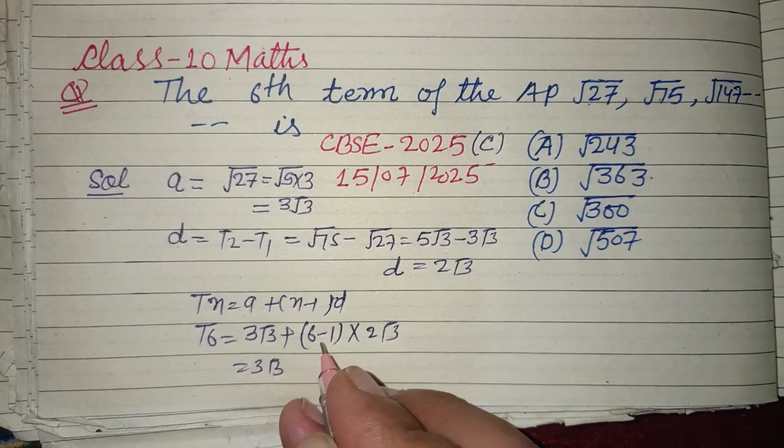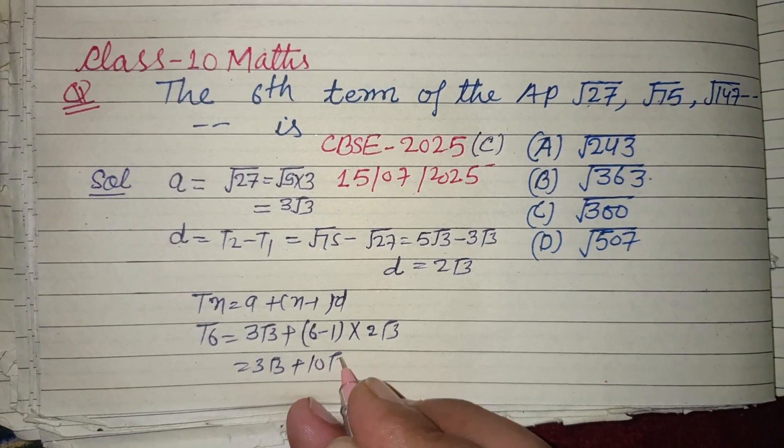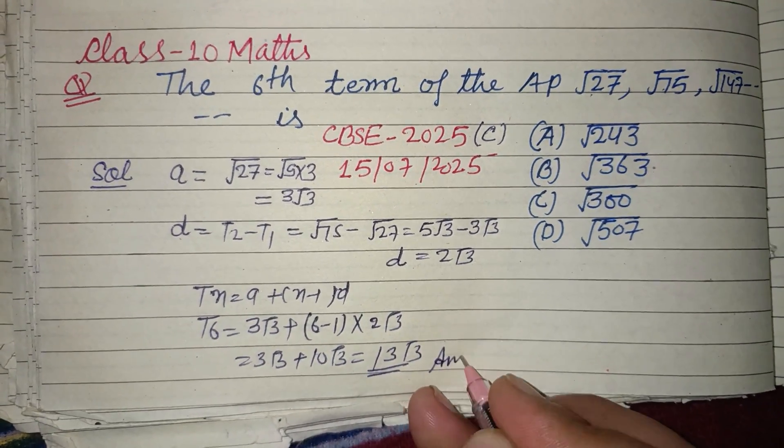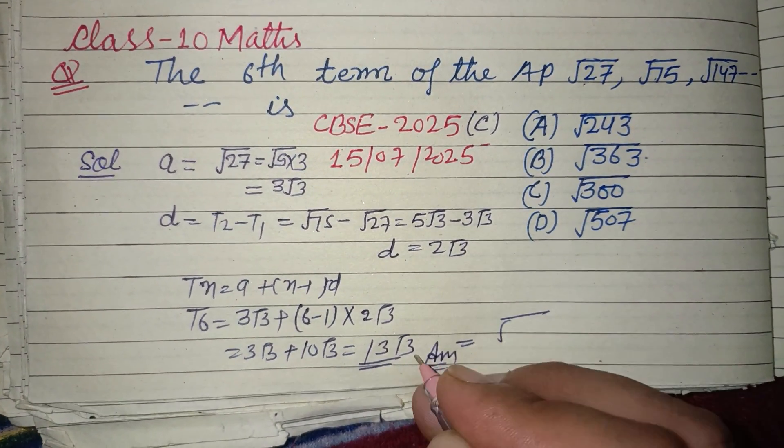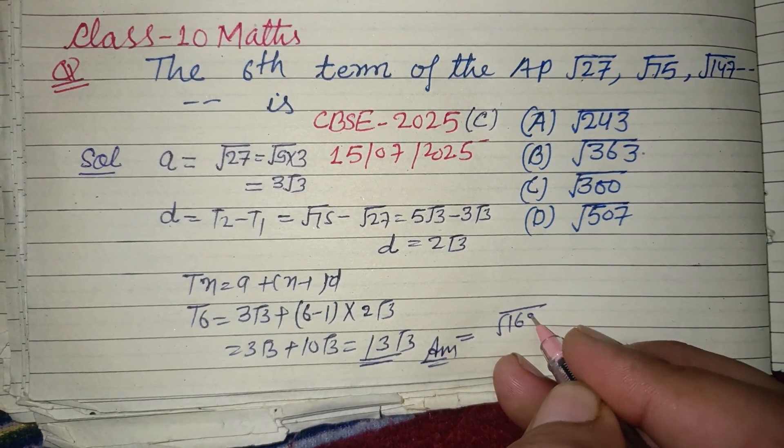3√3 + 5×2√3 = 3√3 + 10√3 = 13√3. So 13√3 is the answer to this question. We write it as: when we take 13 inside the root, we get 169